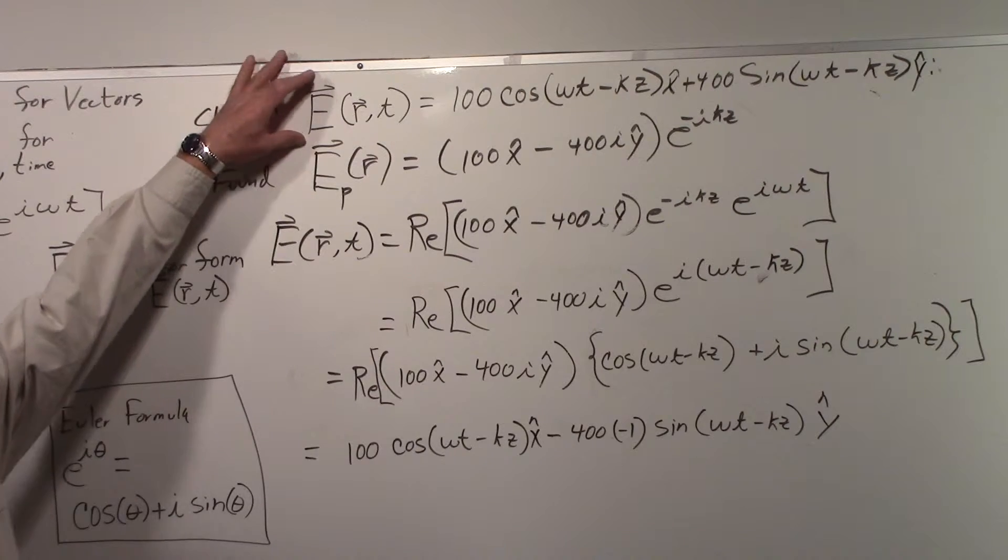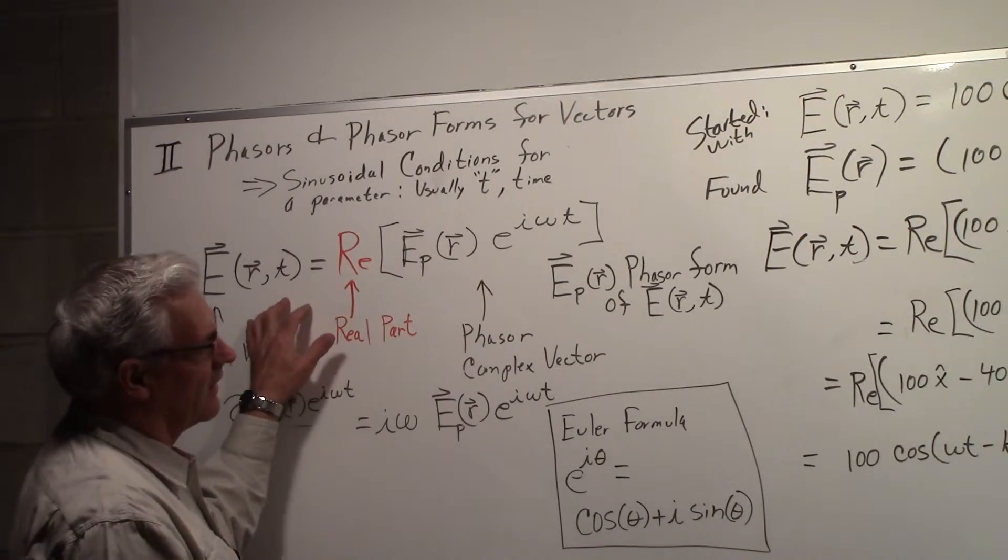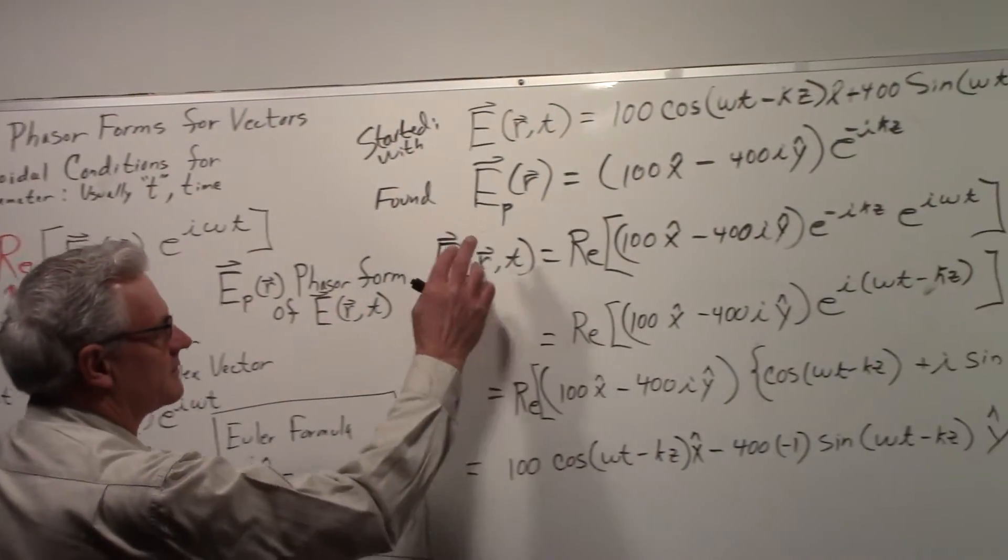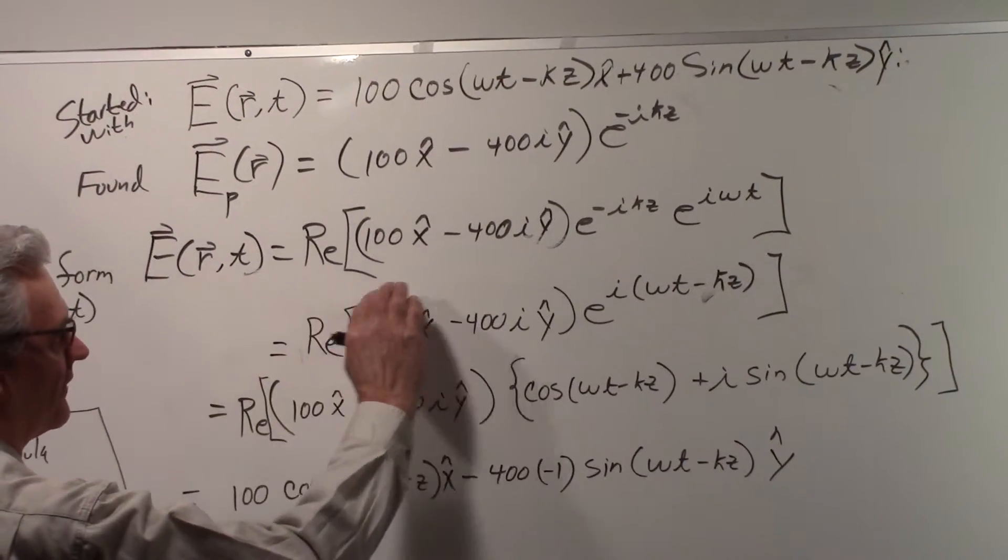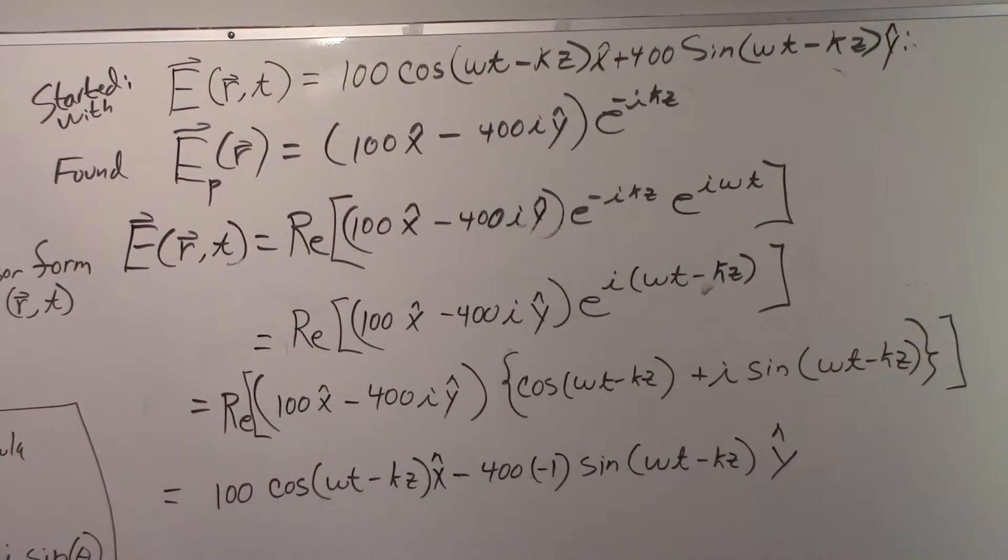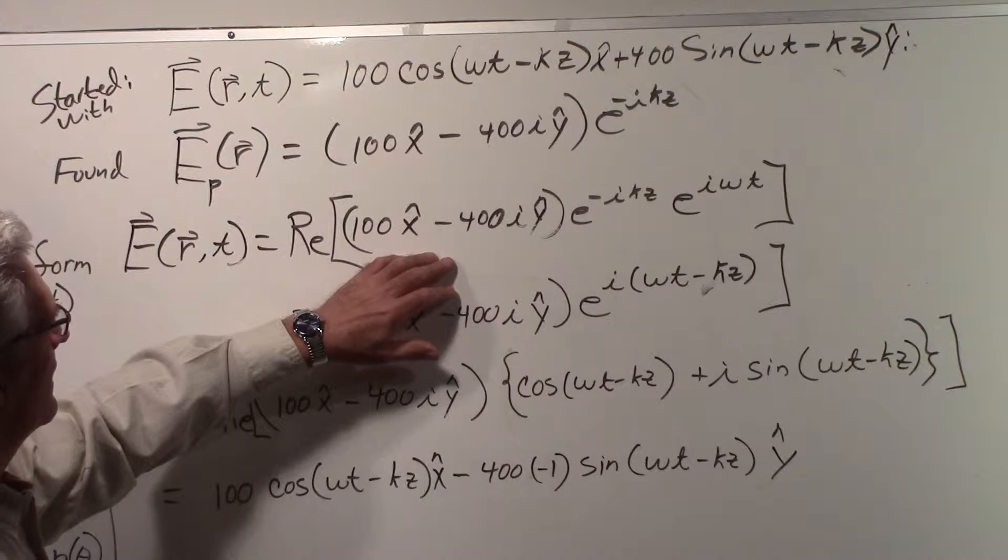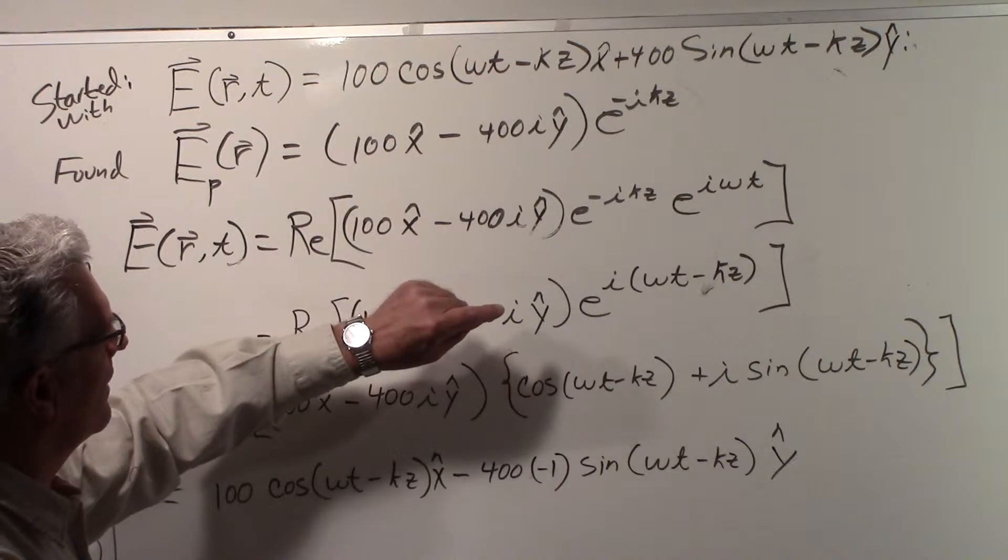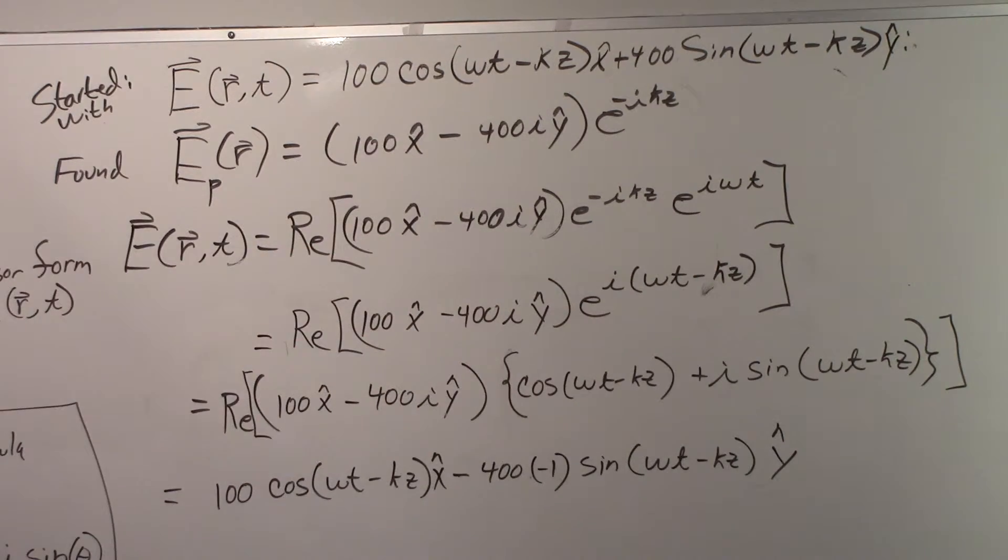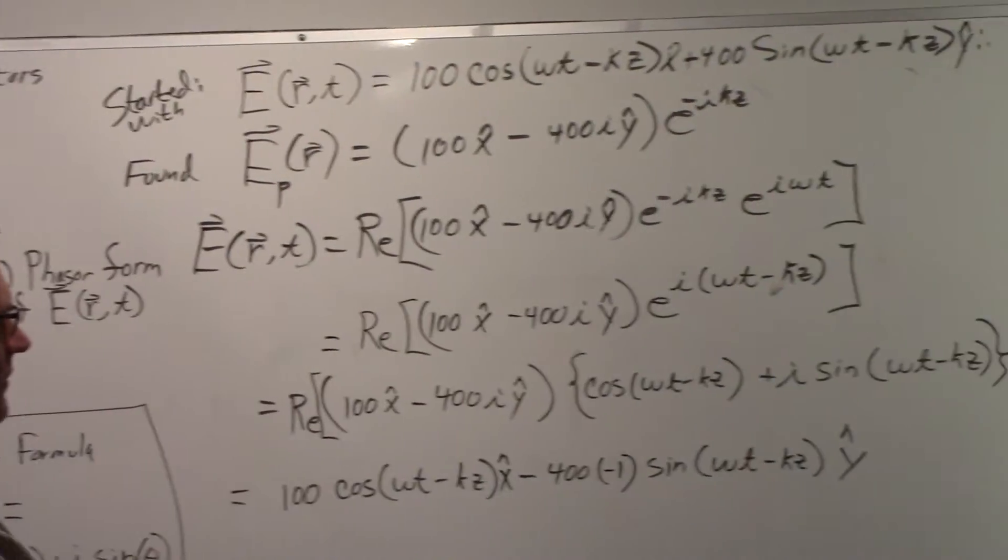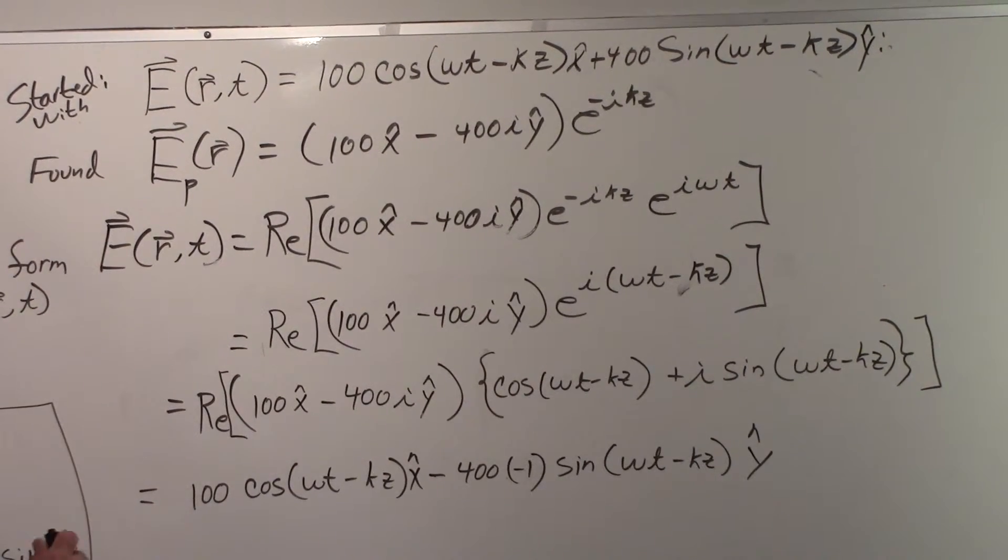Using the expression here, we rewrite the vector that we're trying to find—the real vector—to be the real part of the imaginary vector. What we have done is written the e^(iωt) that we have over here. So the real part of this should give us this, and now we're going to try to find this.